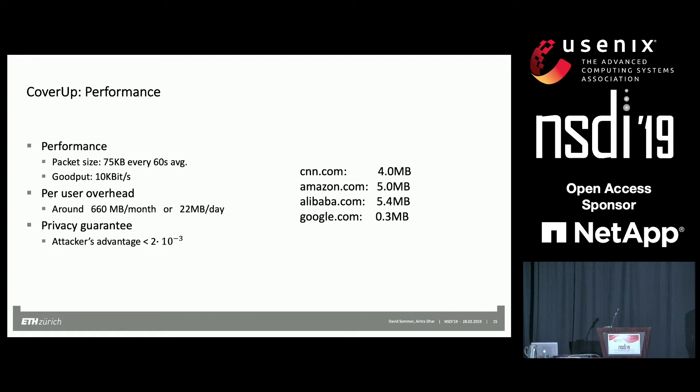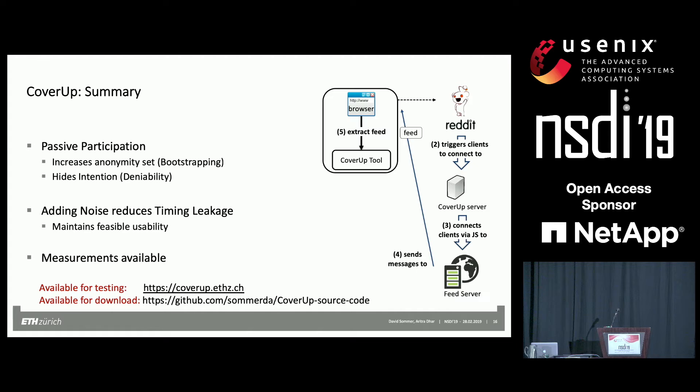For performance, it is heavily dependent on packet size and frequency since it is fully parameterized. Given 75 kilobytes of packet size and 60-second frequency, you get throughput of around 10 kilobits per second — enough to download textual data. Passive user overhead is around 22 megabytes per day, which is really small given that well-known pages like CNN or Amazon serve around five megabytes per page. So this is significantly small overhead. All of this gives you a really good privacy guarantee of less than 10 to the power of minus three.